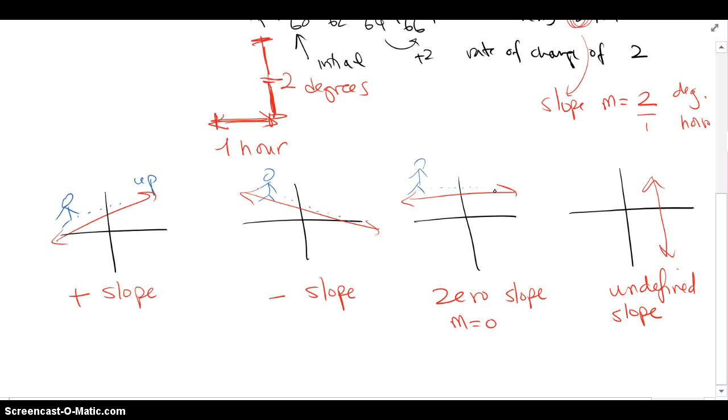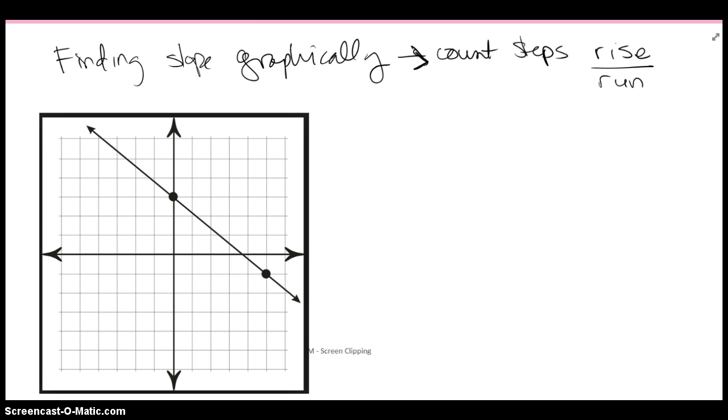An undefined slope is basically a vertical line. When we try to calculate the slope, you will get a zero in the denominator and it becomes undefined. Think of it like an elevator that goes directly up or comes directly down.